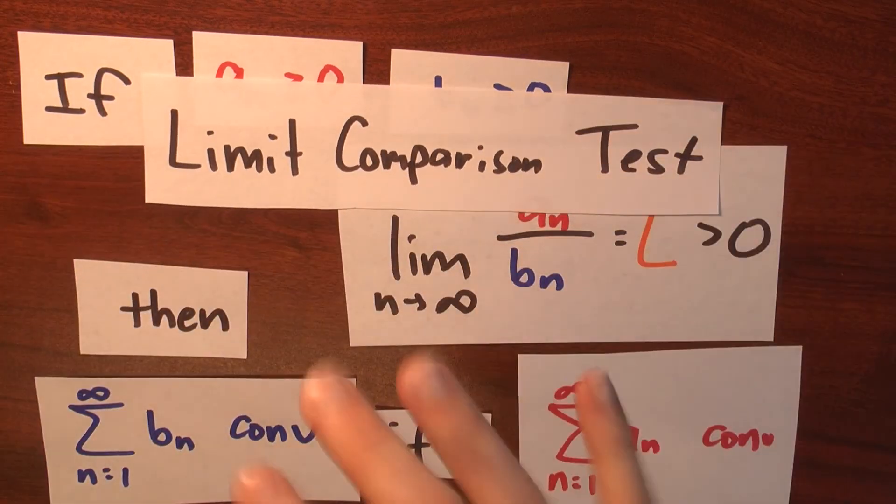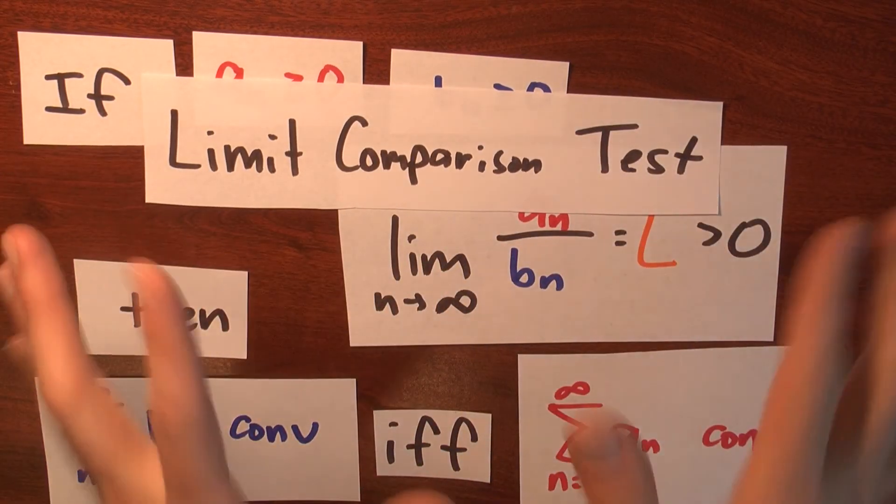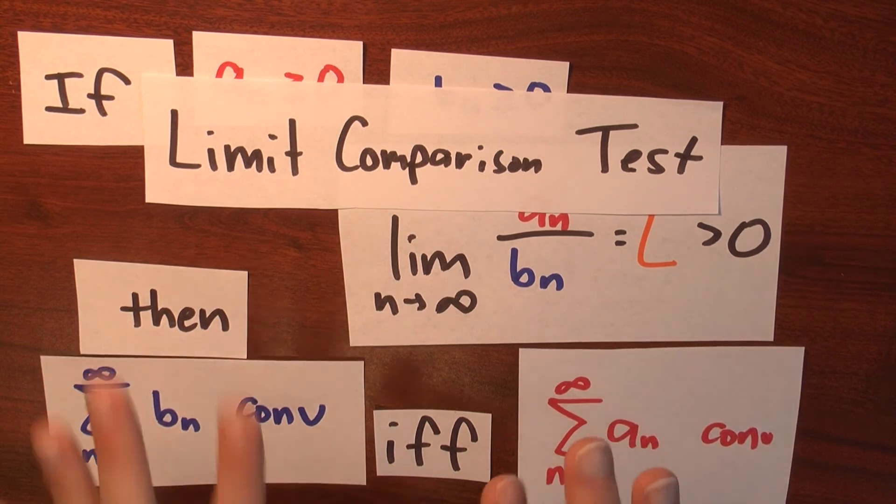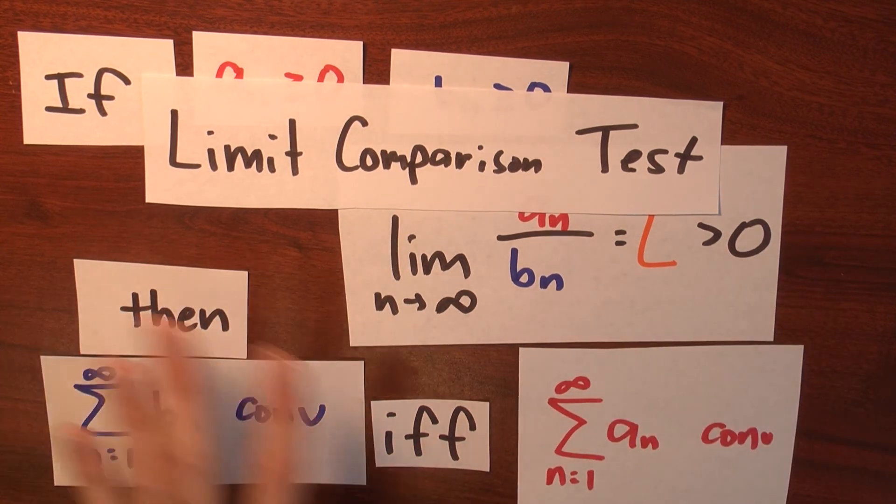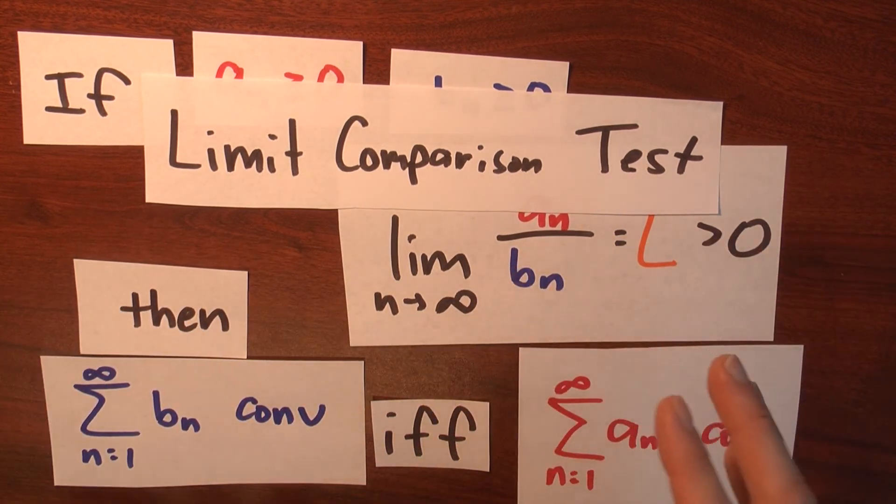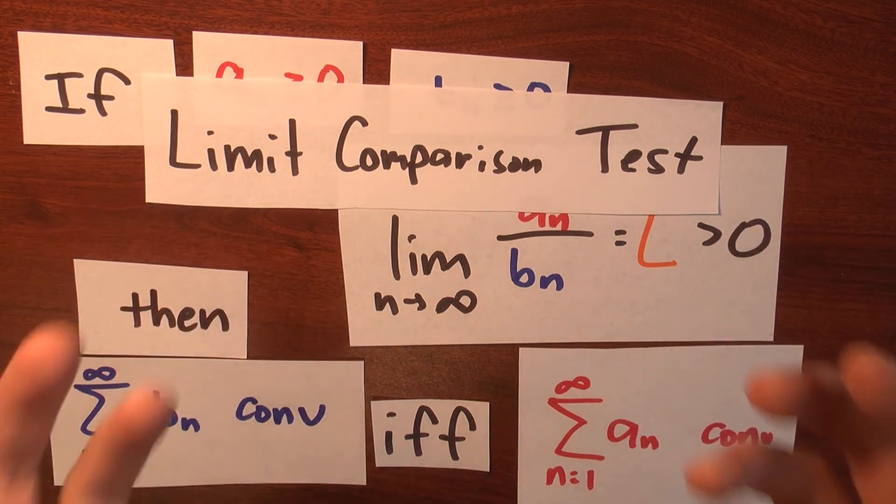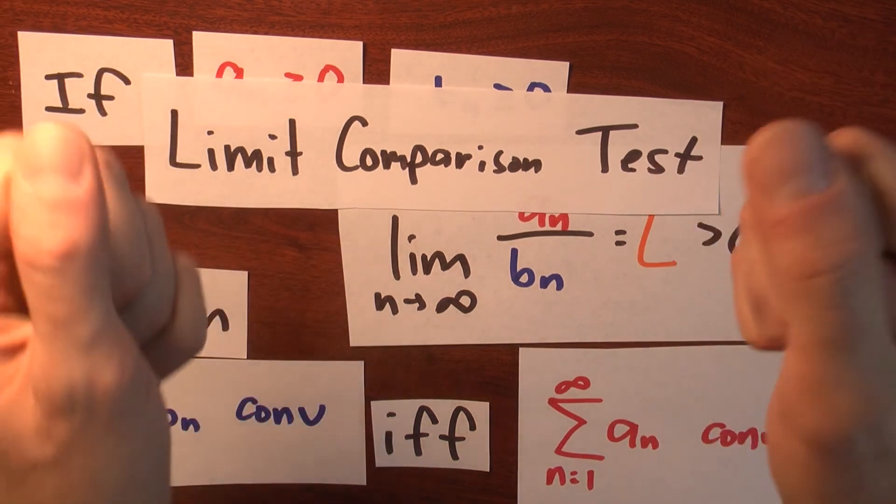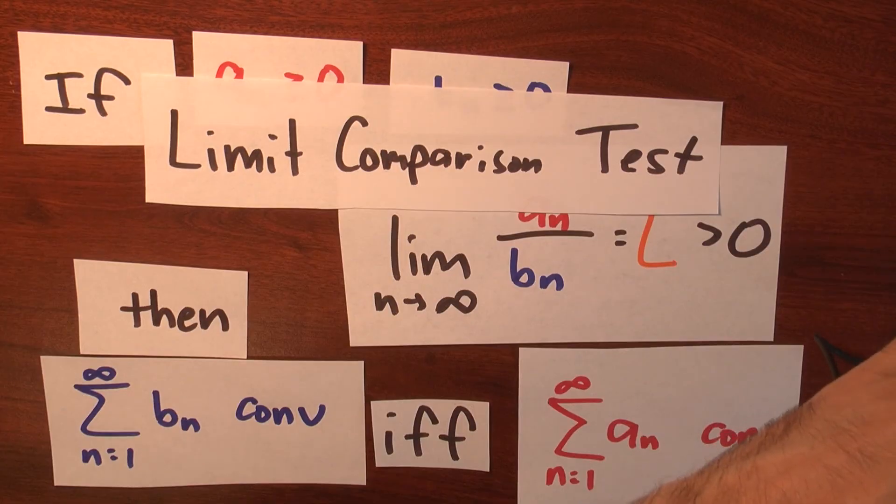This convergence test has a name. This is called the limit comparison test. And it's one of the situations when two series, in this case the sum of the b sub n's and the sum of the a sub n's, share the same fate. They either both converge or they both diverge.